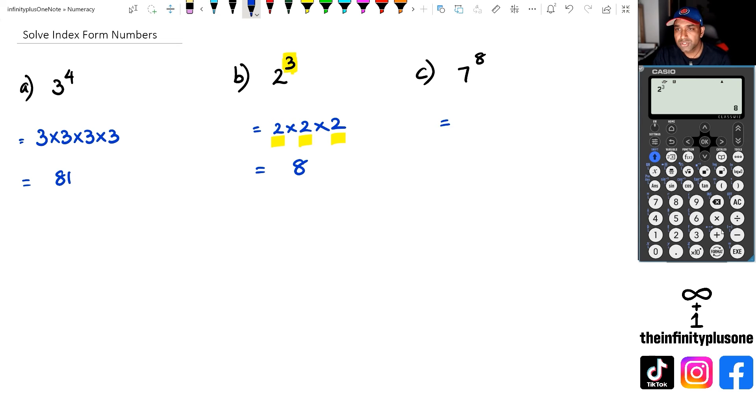Now 7 to the power of 8, again, you can use the calculator straight away for this. And it can get a bit tedious if you were to go 7 times 7. Like I'm already getting tired just doing 3 of them. Again, 4, 5, and look at how much concentration I've got to have. 6, 7, and 8. So I'm getting somewhere like 5,764,801. But let's actually do this real quickly. We're going to go 7 to the power of 8. And that's going to give me that same answer, which is 5,764,801.